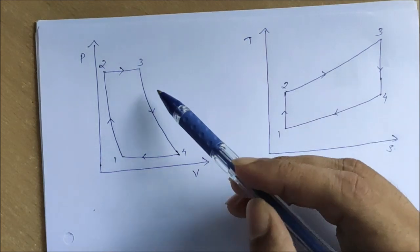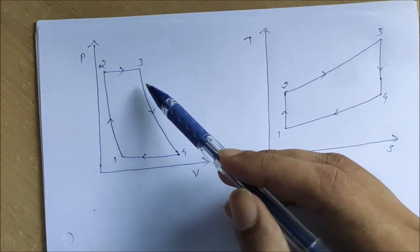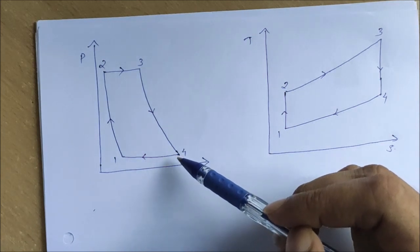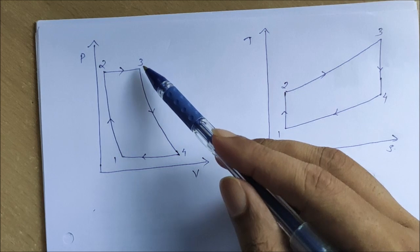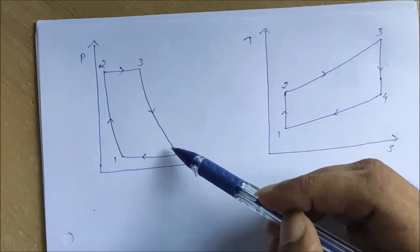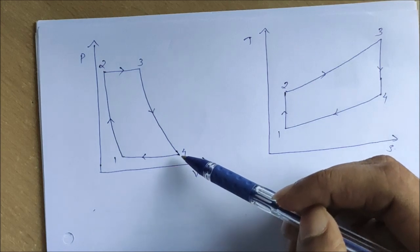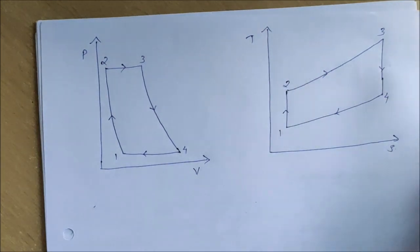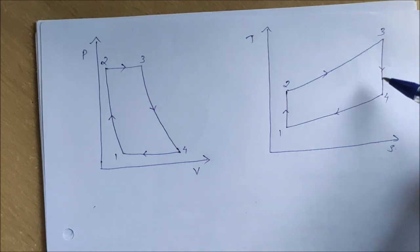Process three to four is isentropic expansion. In the PV diagram, volume increases and pressure decreases during this expansion. In the TS diagram, it is isentropic expansion, so it takes place at constant entropy.